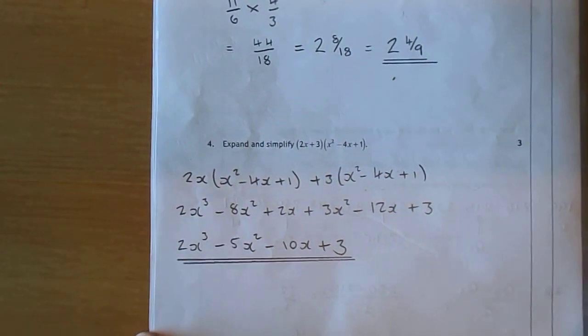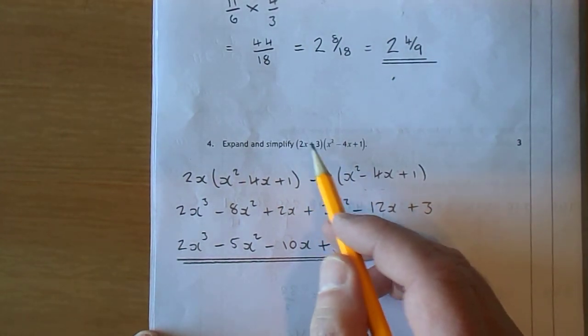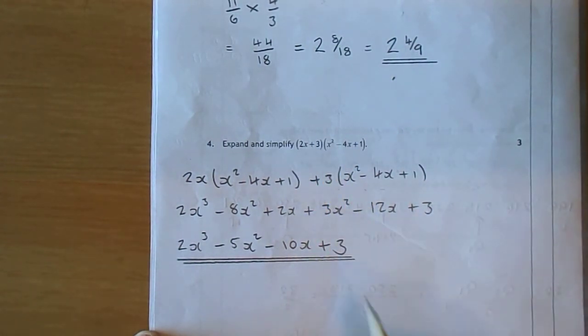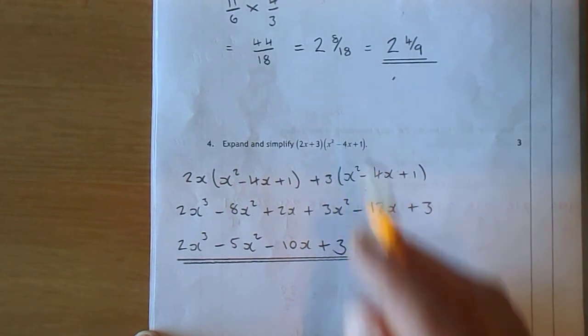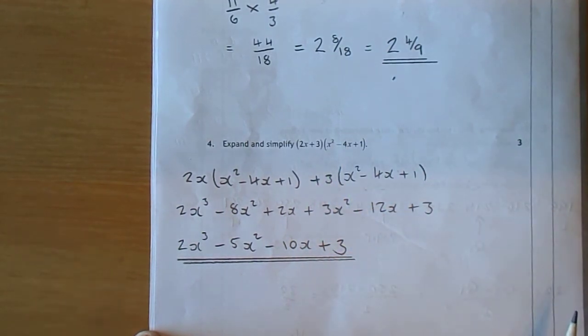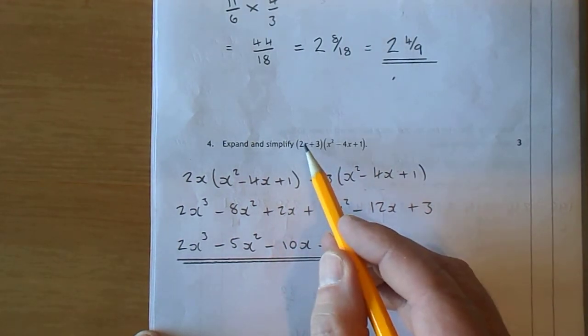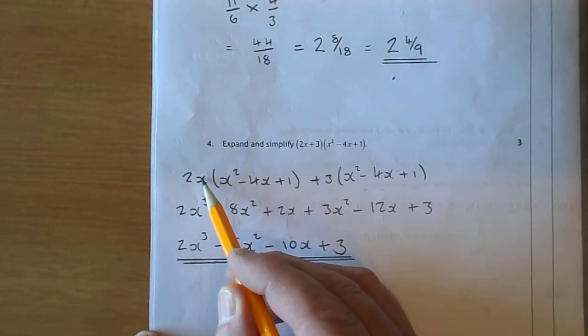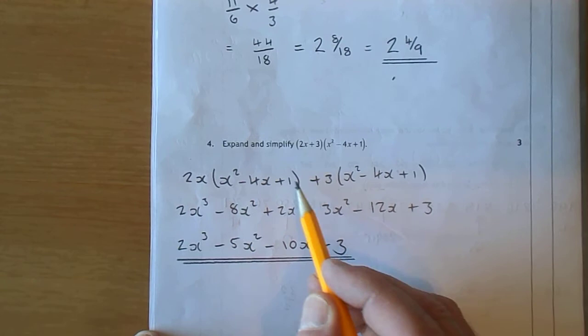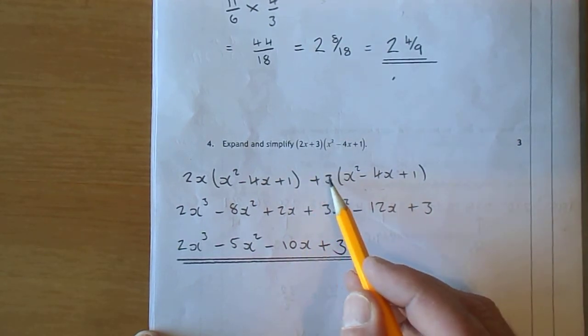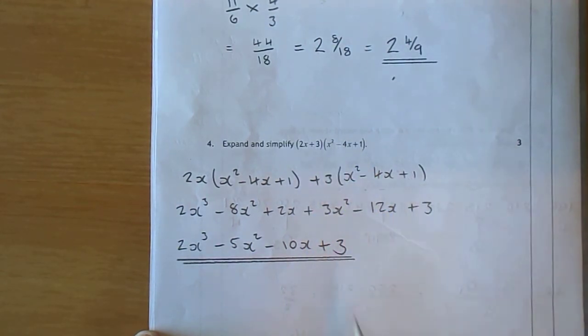Moving on to question 4, where we are quite usual now we have to expand and simplify. So we have 2x plus 3 multiplying x squared take 4x plus 1. The easy way to do that is to split this up, put the 2x there and copy that there. Then put plus 3 and copy that there. So we split this up into two sets of multiplications.